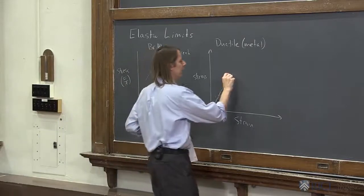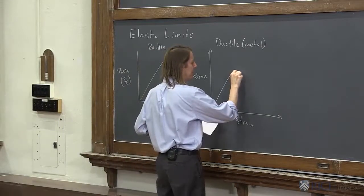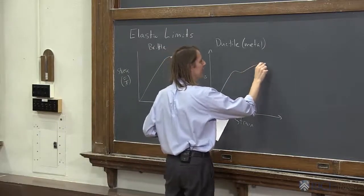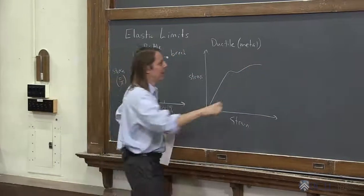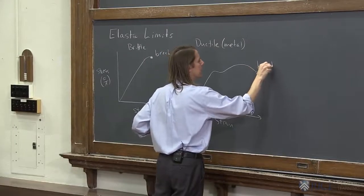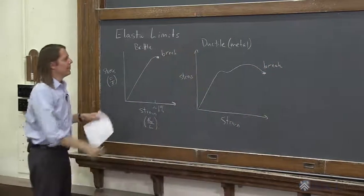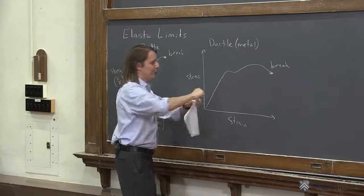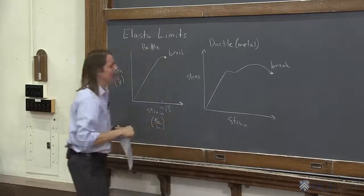It'll start to do something weird, it'll deviate from a line, and then it kind of goes up and over, and here it's like stretching out and making a neck or something. Come over like that, and eventually it'll break. So the difference is what you're seeing here is you're seeing the metal being drawn into a wire. That's what can really happen.